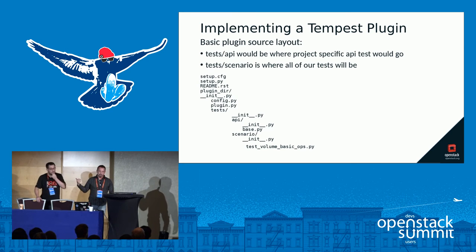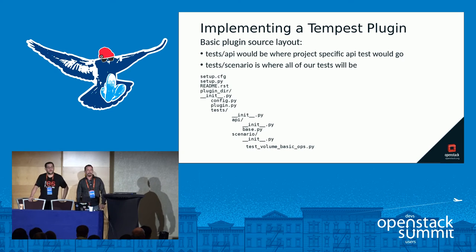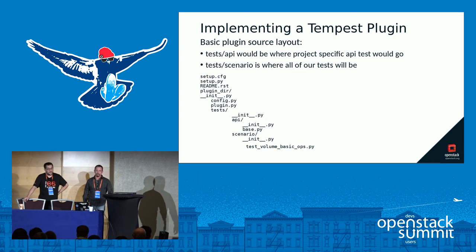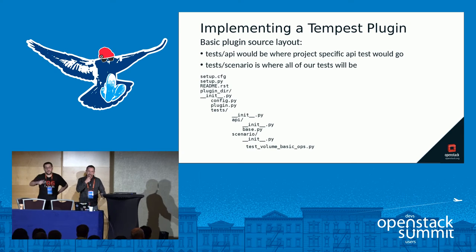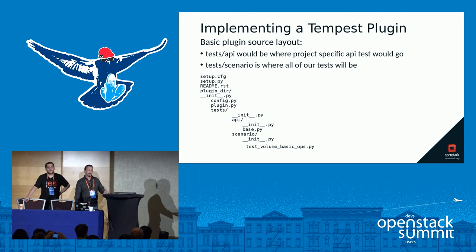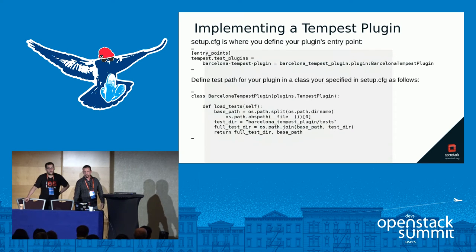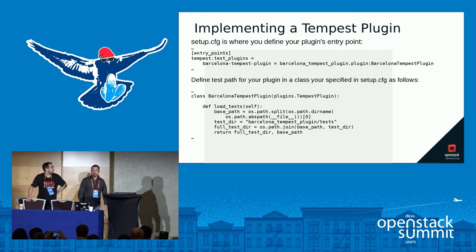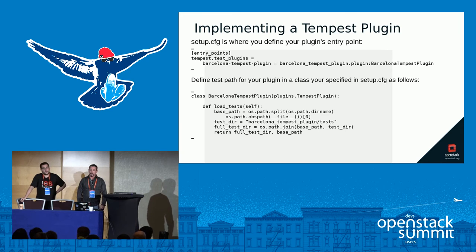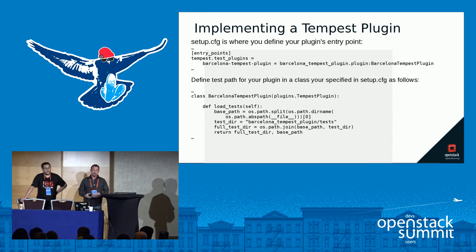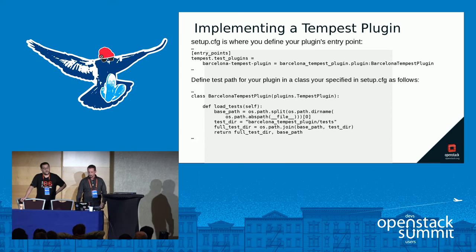I went to an existing plugin and used it as a reference — this is the basic source tree. The main things to be concerned with are setup.config and how you lay out the tree. You can also put API tests in your plugin, but I'm not doing any — I'm going to do a pure scenario plugin. setup.config is where you add your plugin's entry point. In your plugin class, you have a load test method that points to a directory where your tests exist. When the plugin is loaded, it searches the path and makes all those tests available.